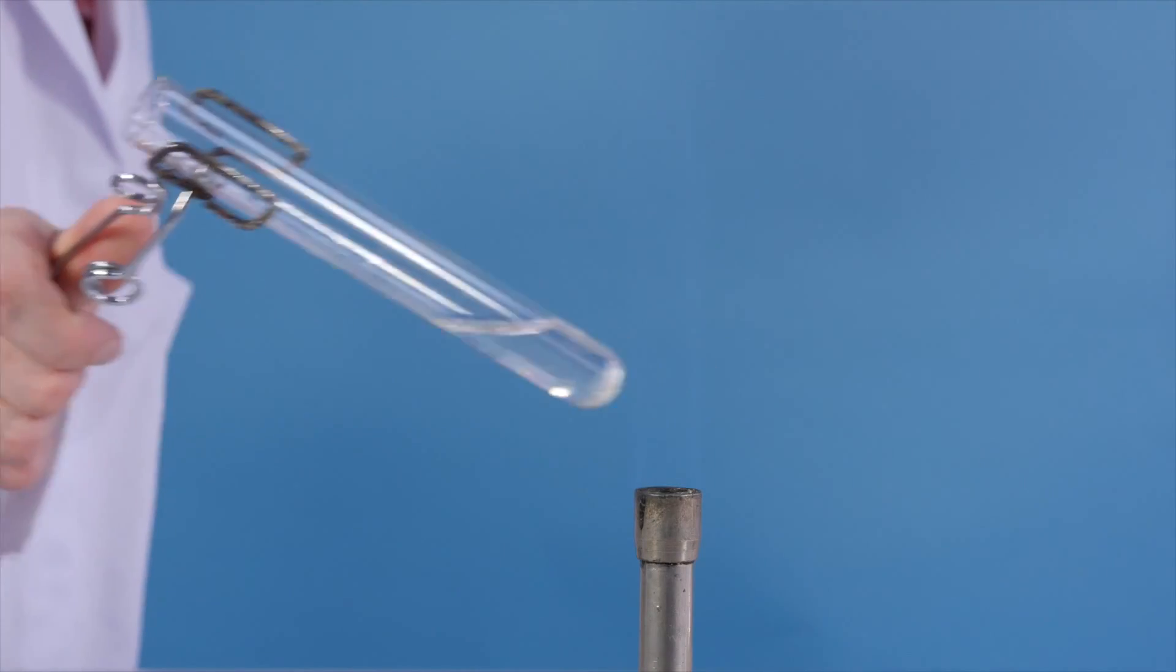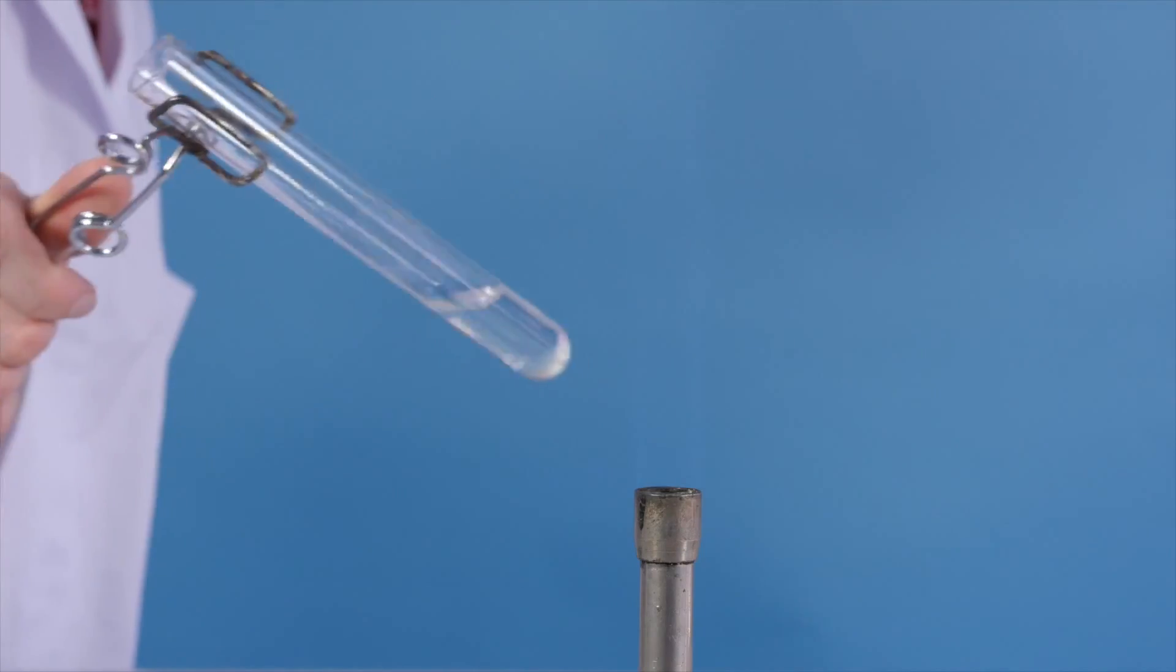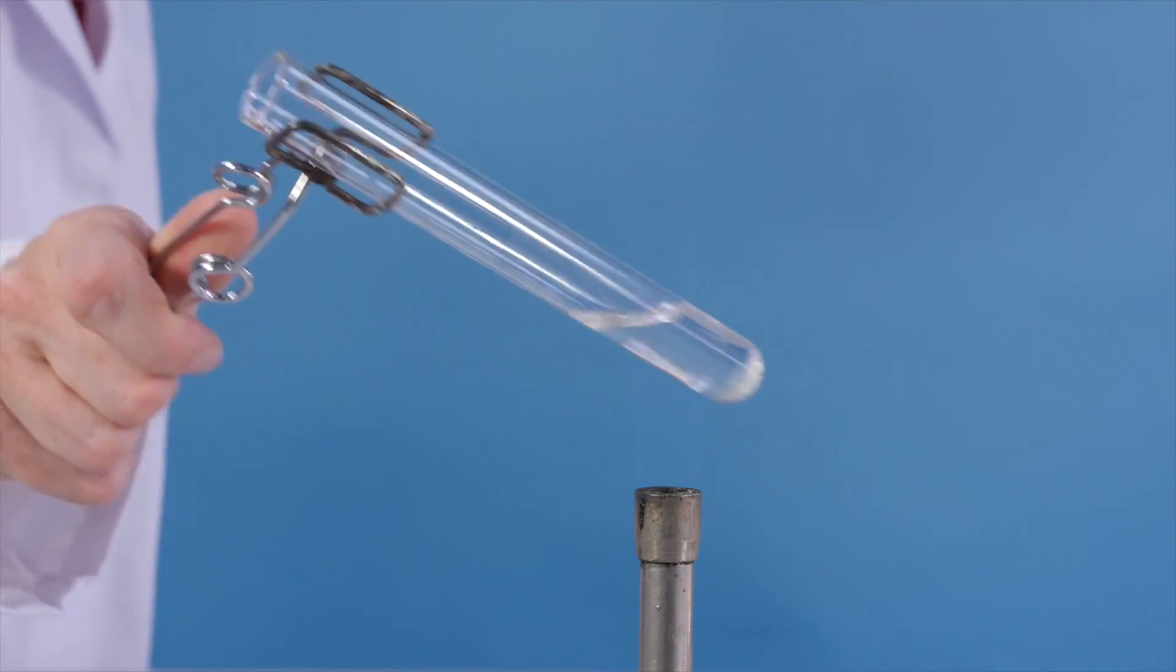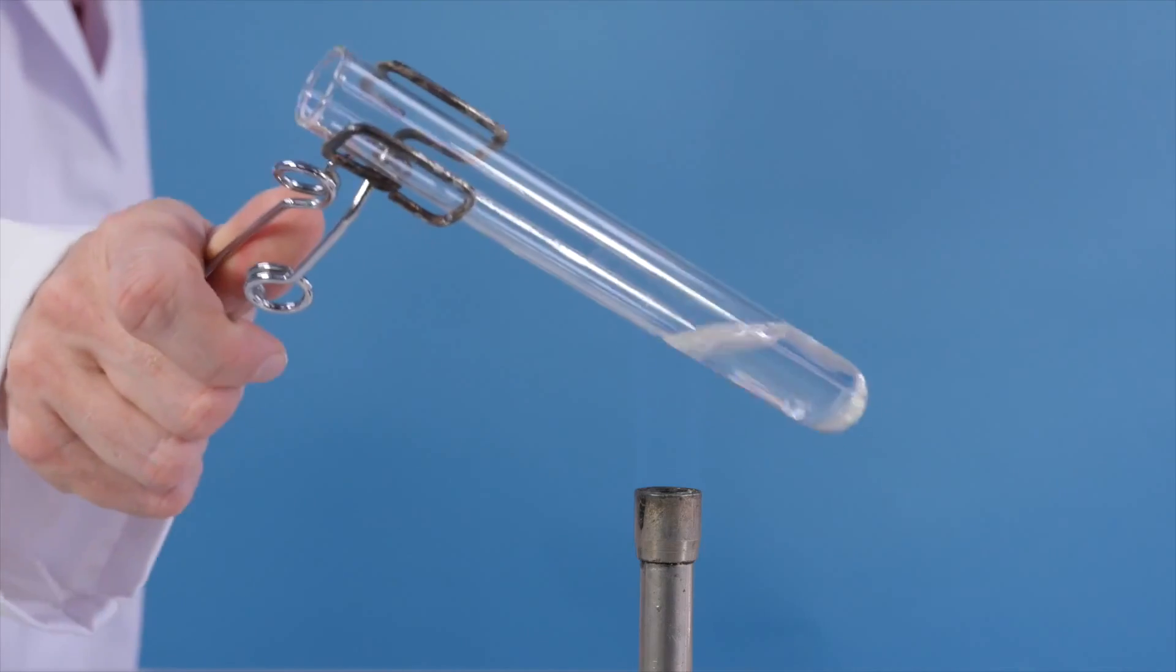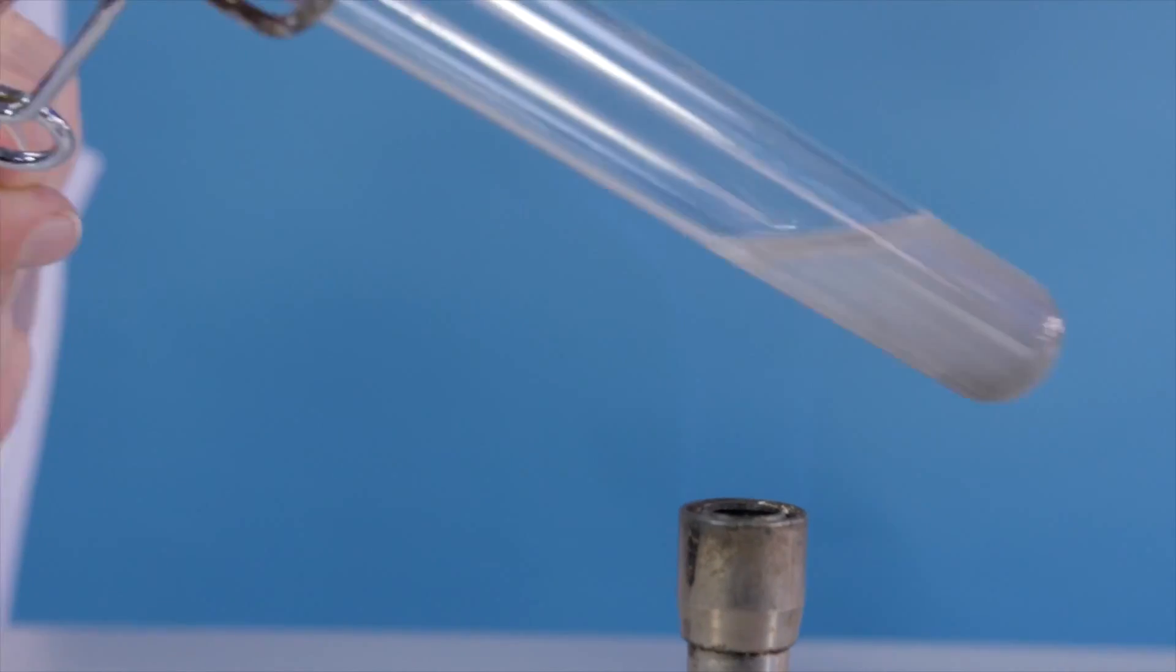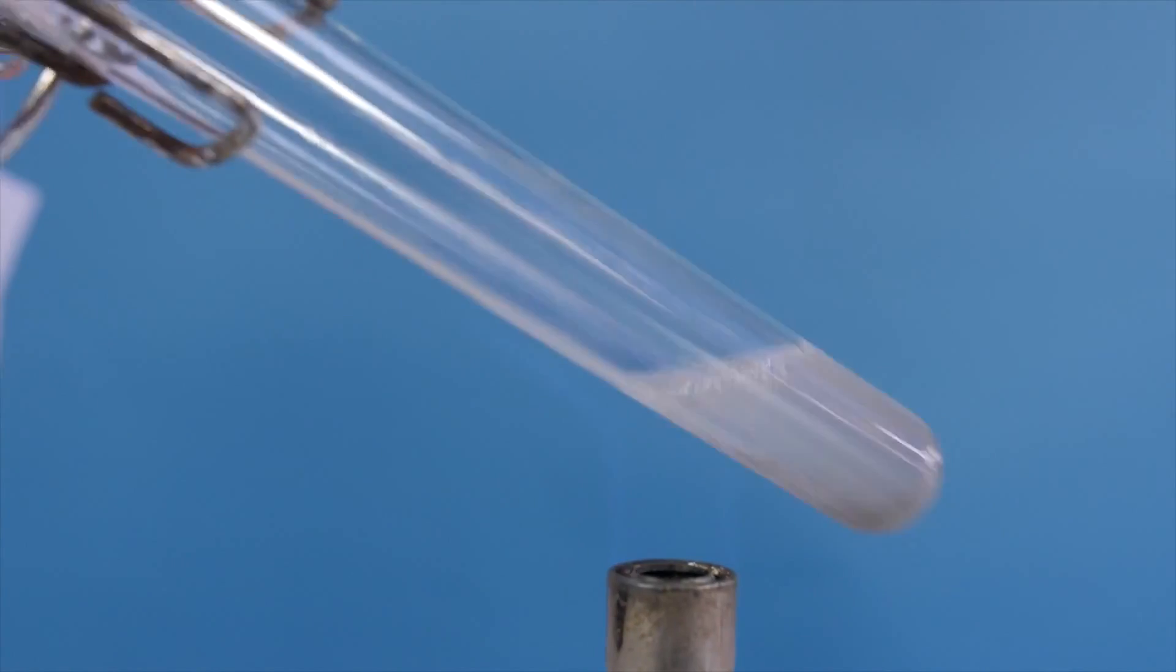Take care to warm the surface of the solution. Be careful as the sudden formation of steam bubbling through the solution can blow the contents of the test tube out. This is known as bumping, which is common with alkaline solutions.